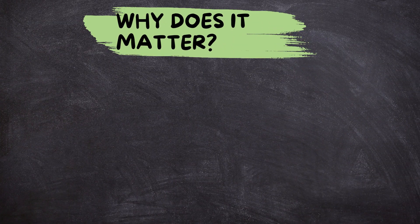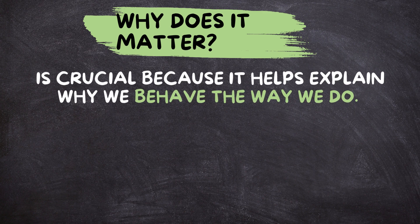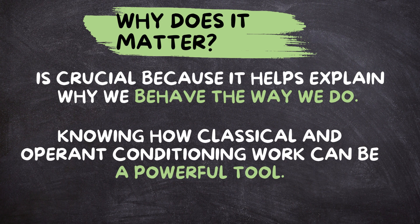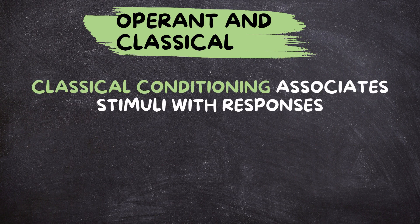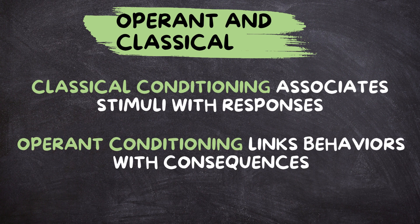Why does it matter? Understanding these conditioning methods is crucial because they help explain why we behave the way we do — whether it's training a pet, teaching a new skill, or trying to change our own habits. Knowing how classical and operant conditioning work can be a powerful tool. In psychology, classical conditioning associates stimuli with responses, while operant conditioning links behaviors with consequences. Although different, these theories help us comprehend the intricate web of behaviors that shape our lives.